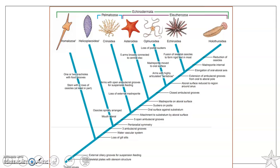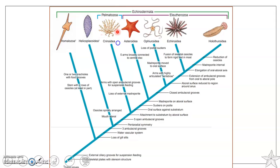The ancestor which had developed ambulacral grooves and the water vascular system later developed pentaradial symmetry and open ambulacral grooves. These ancestors with these characters evolved into the Crinoidea. The Crinoidea had lost the external madreporite and have arms with open ambulacral grooves for suspension feeding.